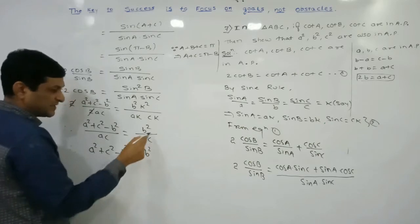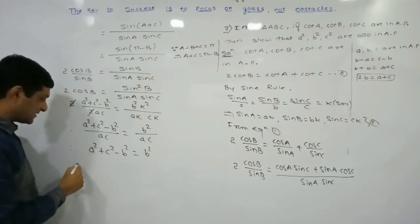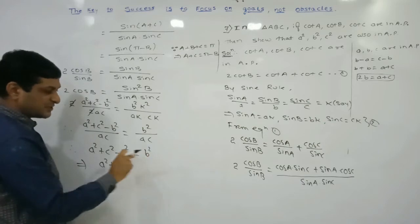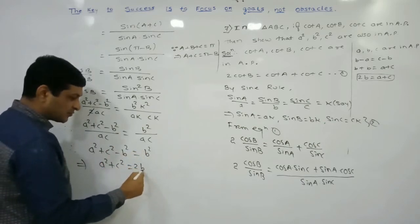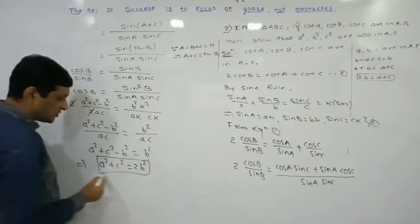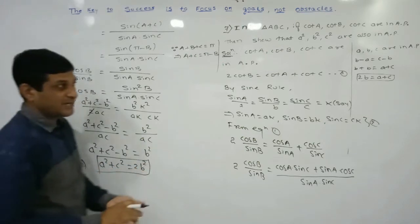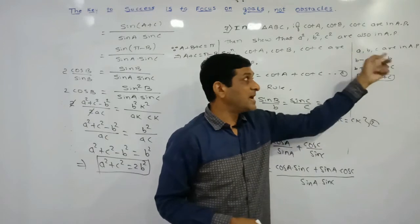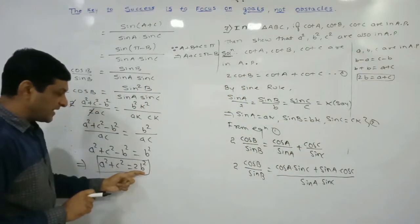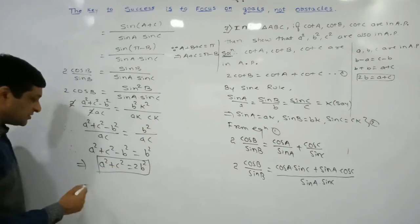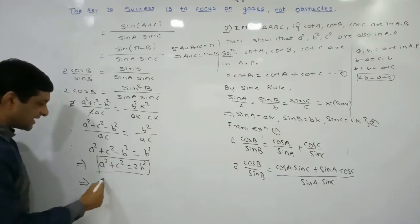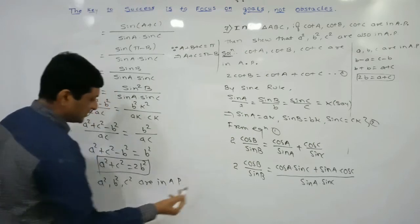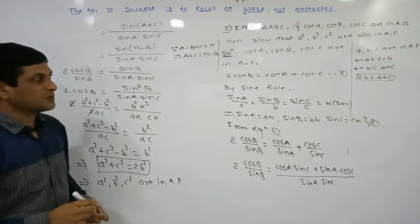After cancelling the factor of 2 and k², we get: (a² + c² − b²) / ac = b² / ac. Then ac cancels from both sides, giving a² + c² − b² = b², which implies a² + c² = 2b². This is exactly the condition that a², b², c² are in arithmetic progression.